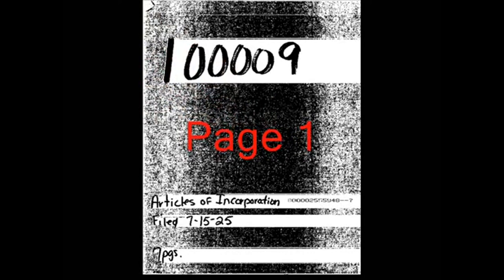Page 1: Articles of Incorporation, Filed 7-15-25, Seven Pages. Page 2: Certificate of Incorporation of United States Corporation Company. Filed in Office of the Secretary of State of the State of Florida, this 15th day of July A.D. 1925. Signed by H. Clay Crawford, Secretary of State. United States Corporation Company — offices in Dover, Chicago, Albany, St. Louis, Jersey City, Philadelphia, Los Angeles. International Corporation Company, Rue de la Paris. Executive Office: 65 Cedar Street, New York City.